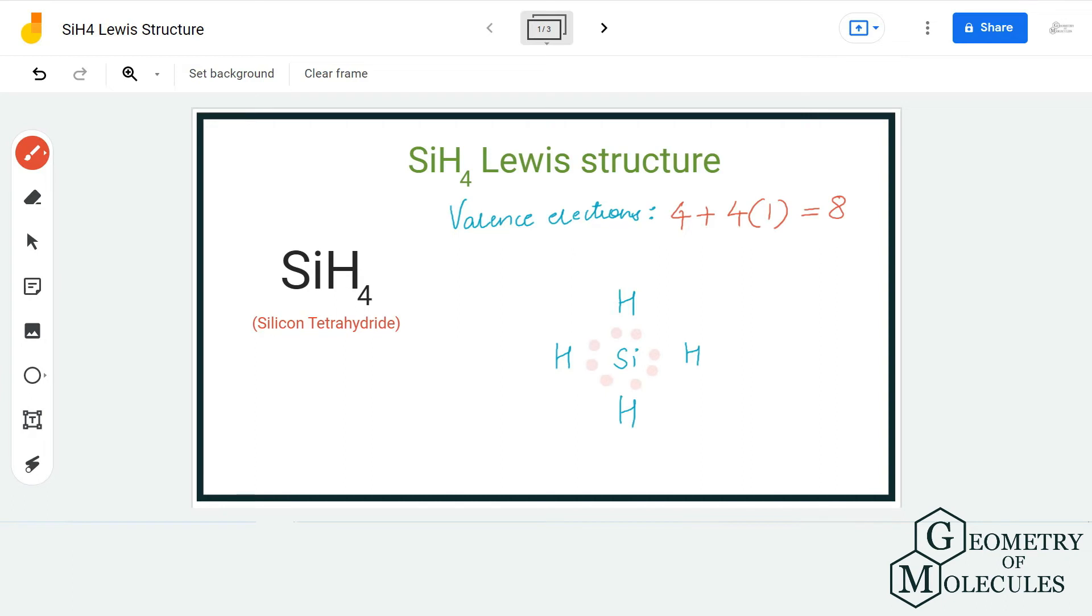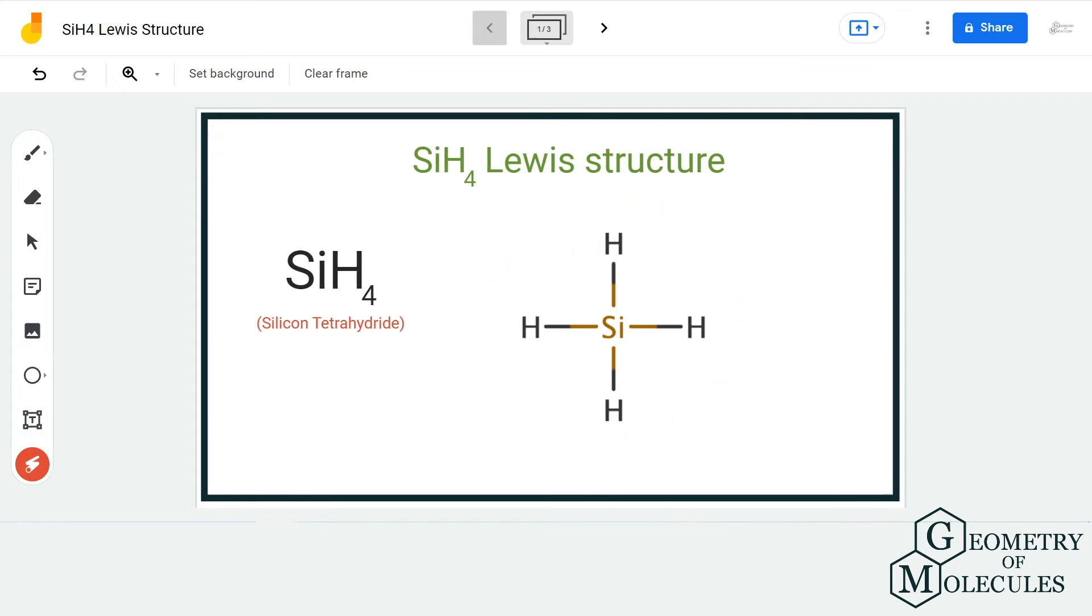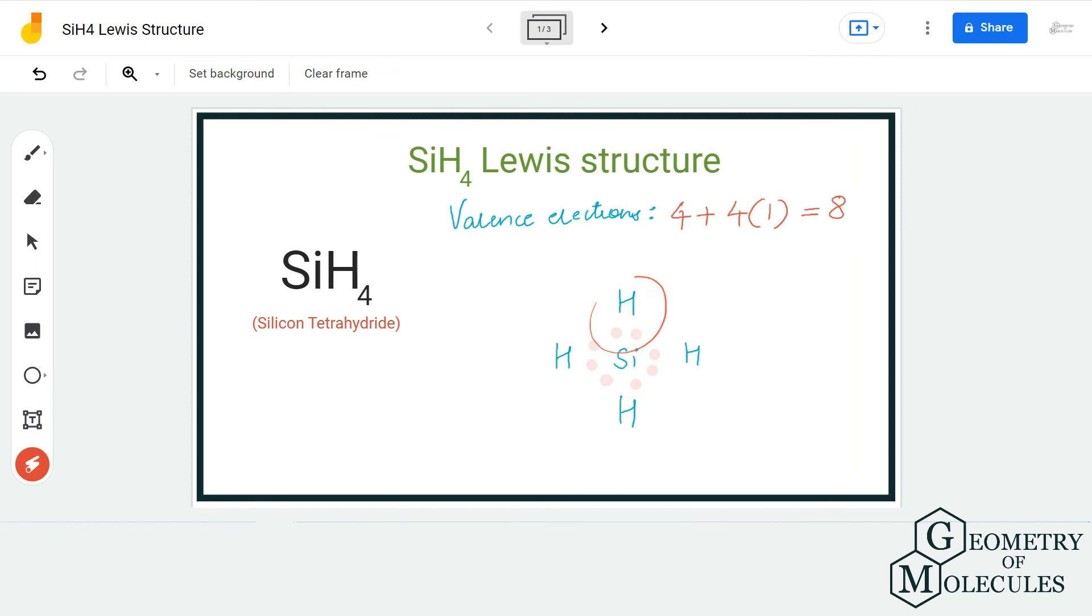This is the Lewis structure of SiH4, as hydrogen atoms have two valence electrons in their outer shell which completes their outermost shell, and the silicon atom has eight valence electrons in its outermost shell, hence completing its octet.